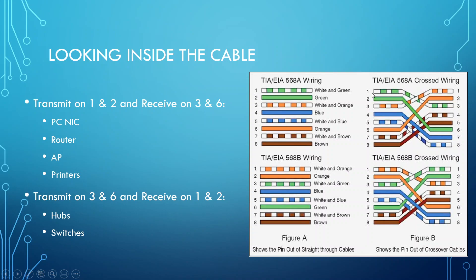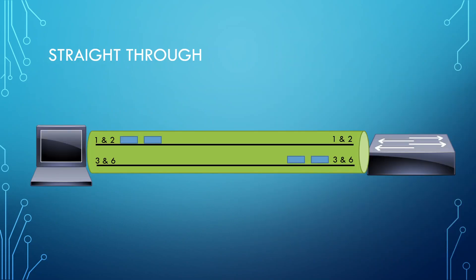With the crossover cable, we connect the white-green wire to pin one on the left side and then to pin three on the right side, and connect the green wire from pin two on the left side to pin six on the right side. The crossover cable solves our collision issue. With the straight-through cable there's no issue between a switch and a PC because they use completely different wire pairs to send and receive data.